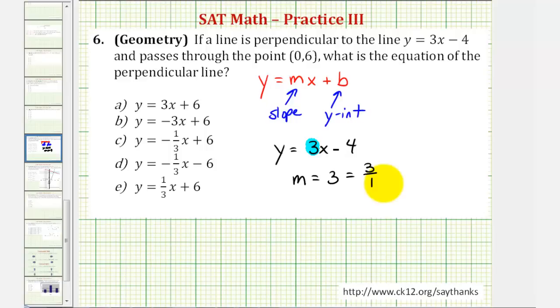The reason we want the slope in fraction form is that if two lines are perpendicular, their slopes are negative reciprocals of one another, which means if the slope of this line is 3 over 1, then if a line is perpendicular to this line, the slope would be negative 1 over 3.